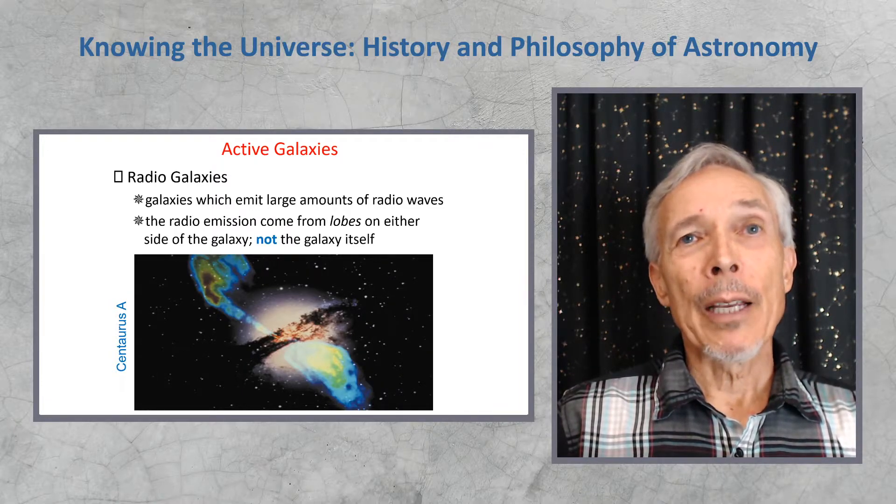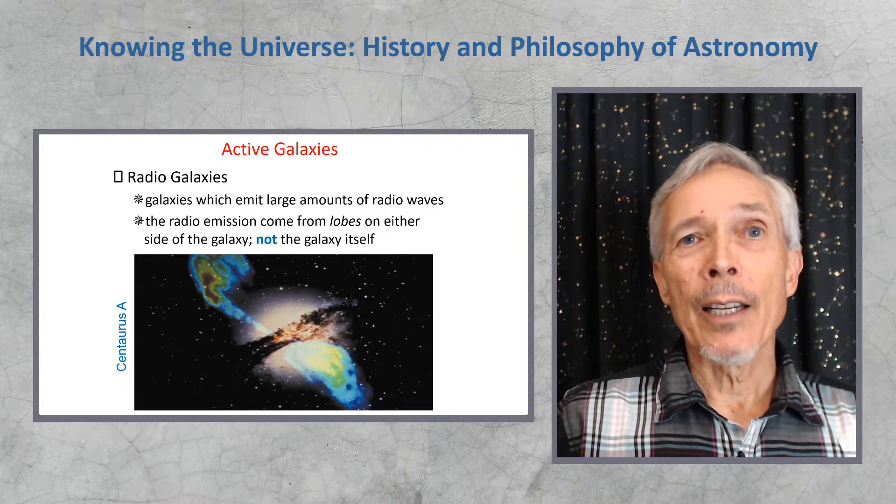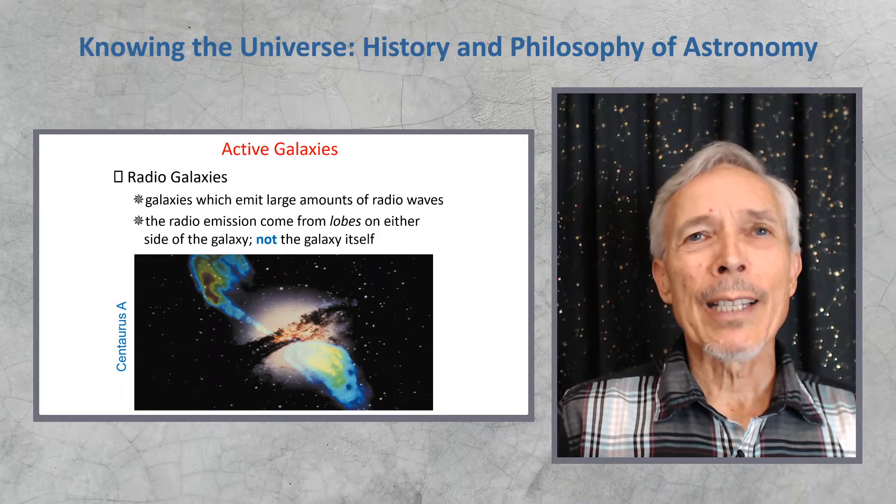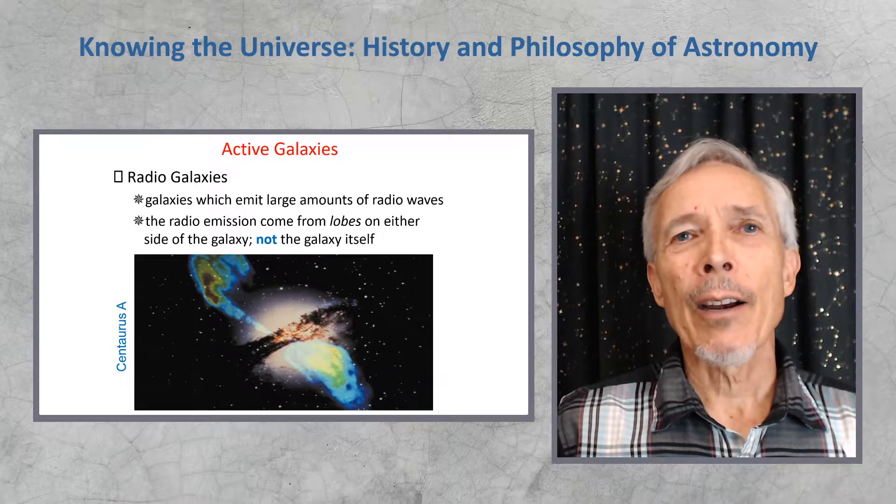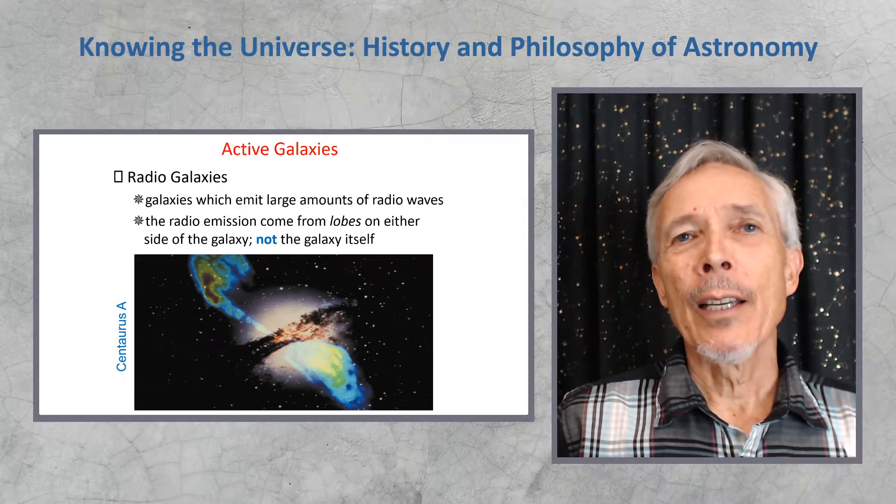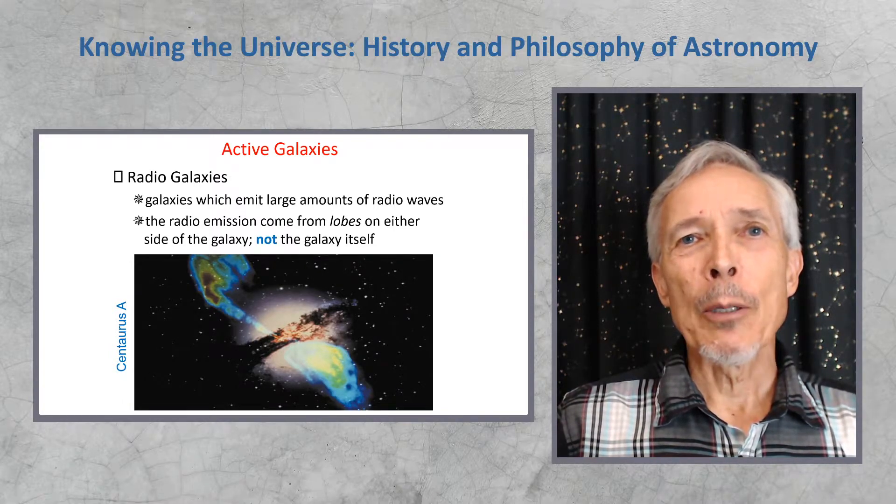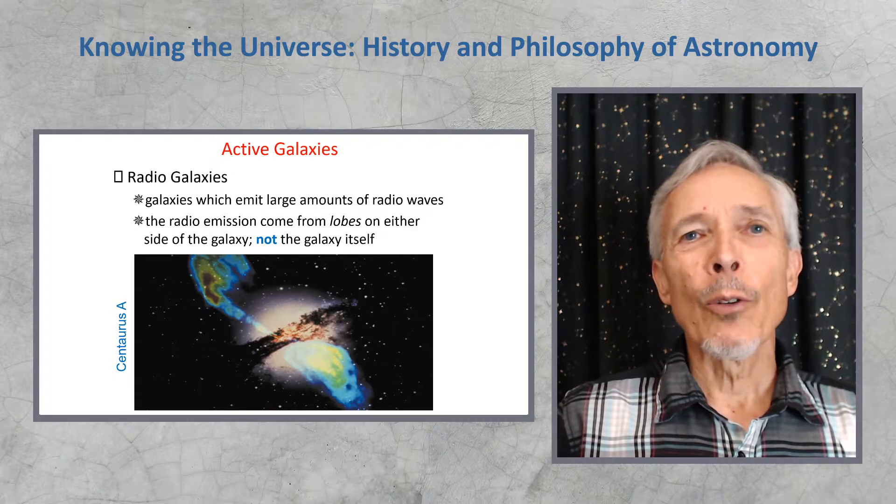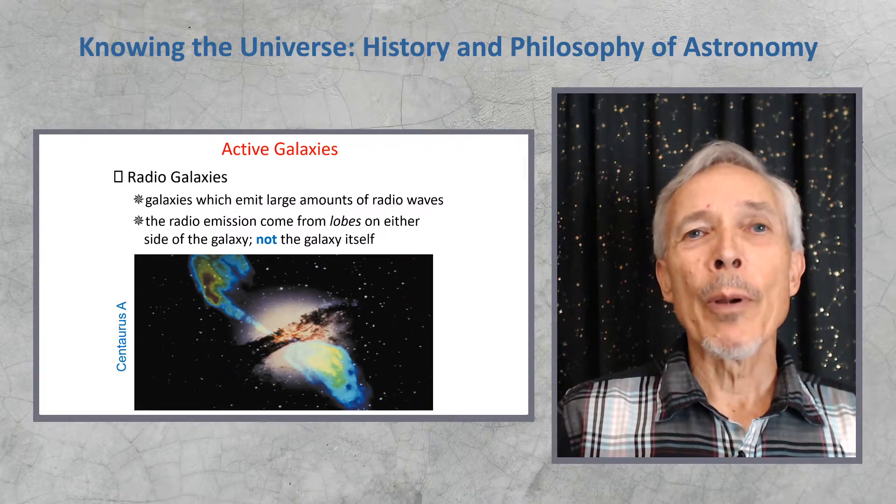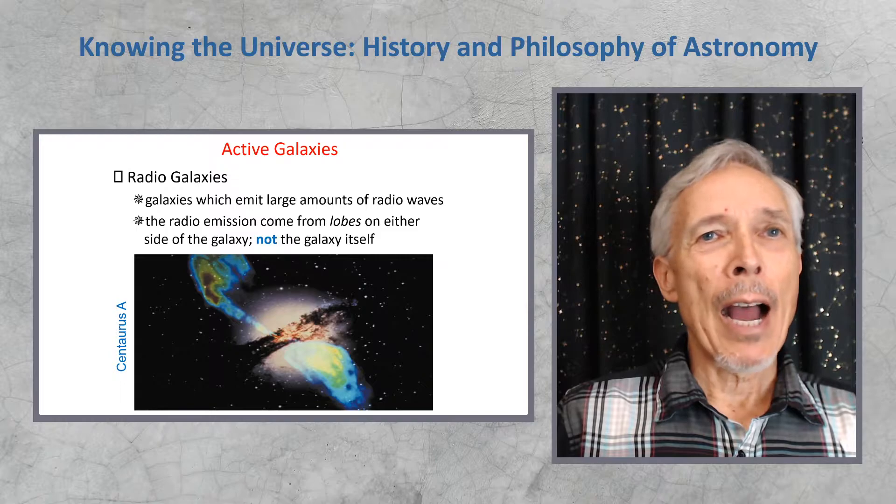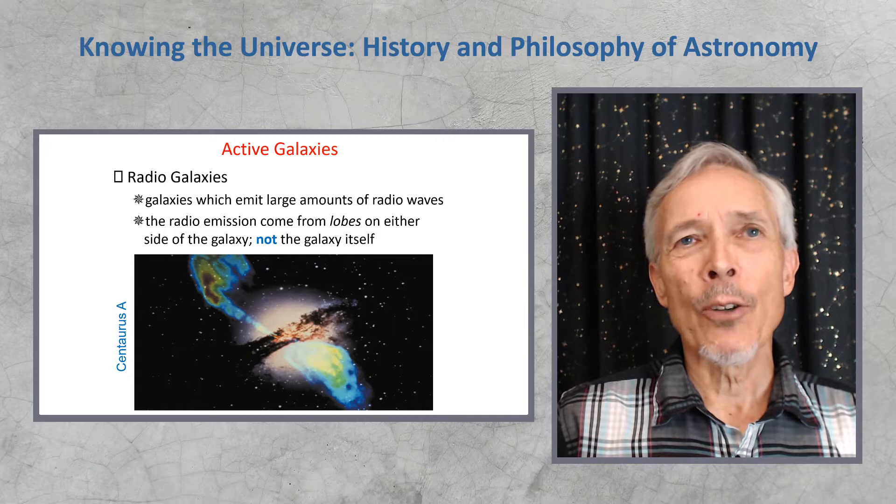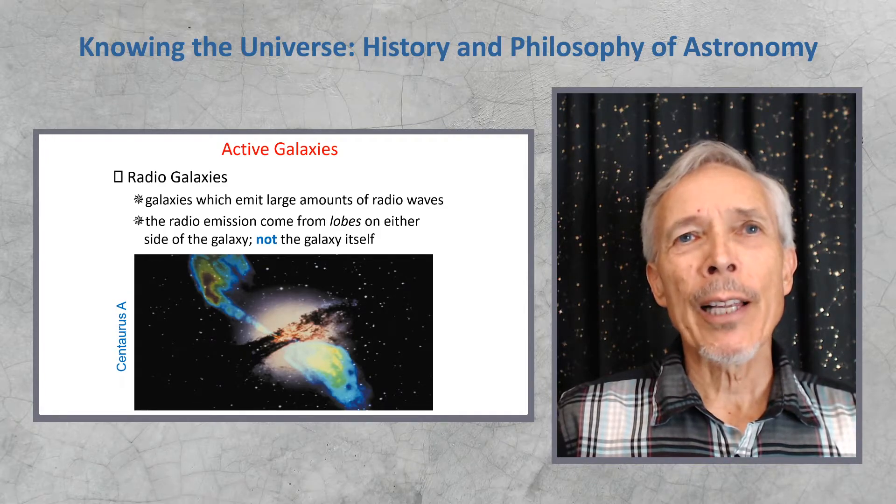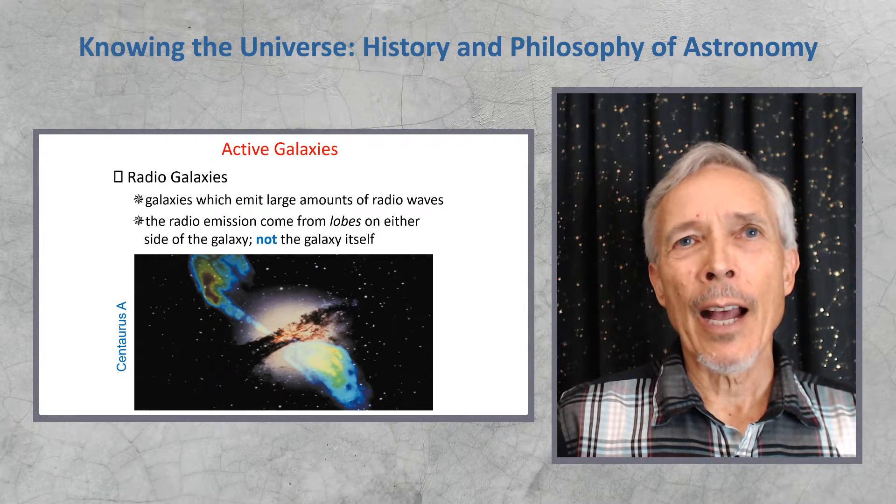But in this case, the radio emission was coming both from the nucleus of the galaxy, but also from huge extended lobes or regions far beyond the galaxy. In this diagram, we see the elliptical galaxy in red at the center in a visible image, and then the blue and green false color is from radio emission, a jet of ionized plasma going out to the top left, and another jet going out to the bottom right in opposite directions. Extraordinarily energetic phenomena in this galaxy.